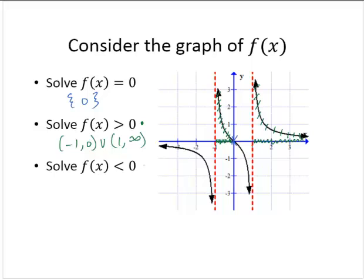Where is f of x less than 0? I'll mark these in red. The outputs are less than 0 along this piece of the curve and the second piece of the curve.